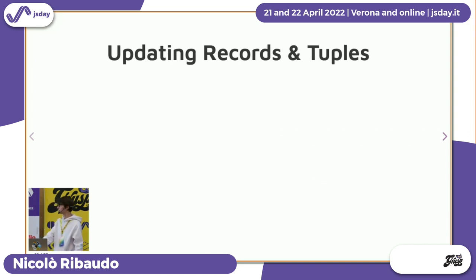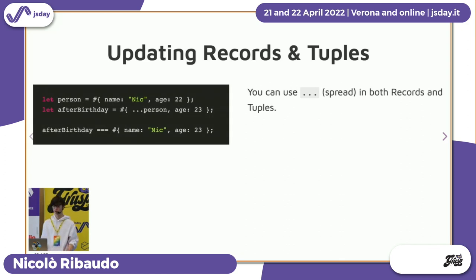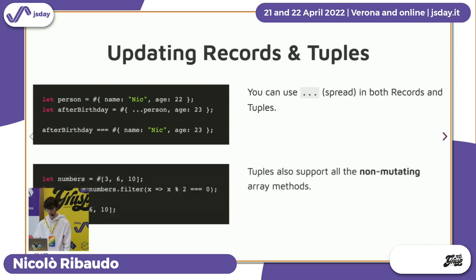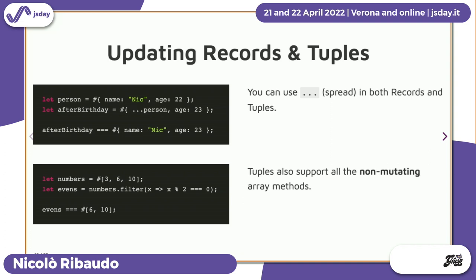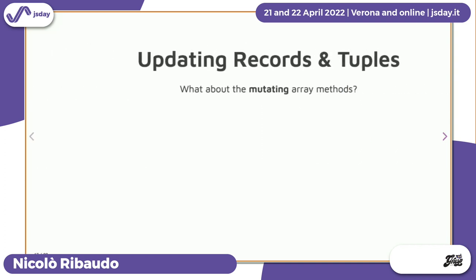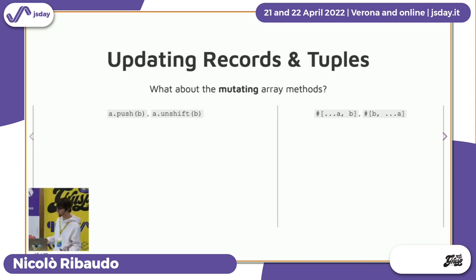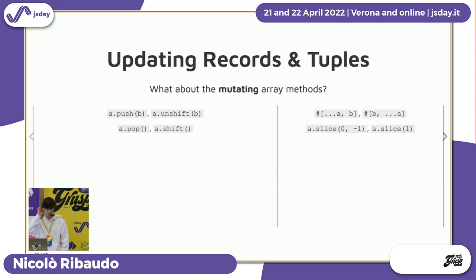We've seen how to create records and tuples, what they are, and how to compare them. How do we create updated copies of them? Exactly as we can do for objects and arrays, we can use the spread operator to add new properties or modify existing ones. Tuples support all the non-mutating array methods such as filter, map, reduce, and others — meaning the methods that do not change the array they are called on. Tuples do not support push because push modifies the array. For push and unshift, when using tuples you can use spread to create a new tuple with a new element. For pop and shift, you can use slice to take everything except the element you want to remove.